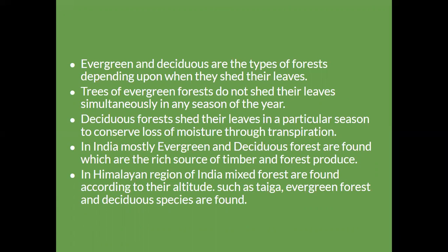Tropical rainforests are found along the rainy slopes of the Western Ghats, the hills of Eastern India, the Andaman and Nicobar Islands, and in some parts of West Bengal and Odisha. These areas experience a hot and humid climate with a short dry season. The average rainfall is around 200 centimeters. Most of the trees in these forests are either evergreen or semi-evergreen. Common trees found here include ebony, rosewood, and mahogany, which are valuable for commercial purposes.